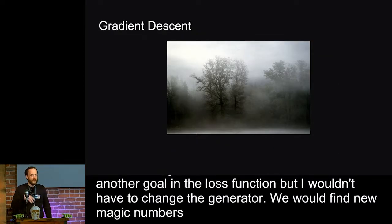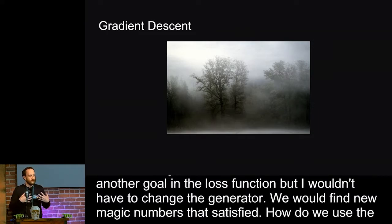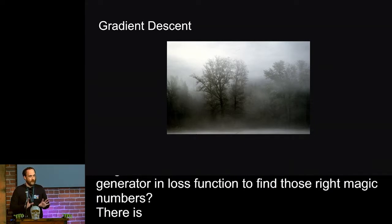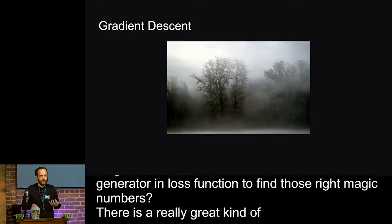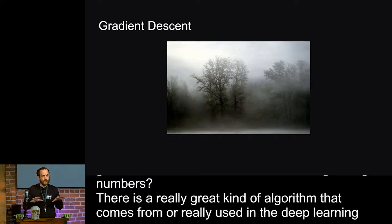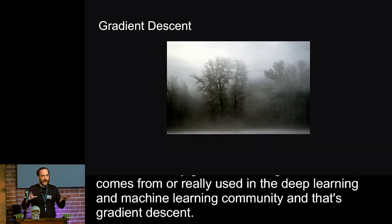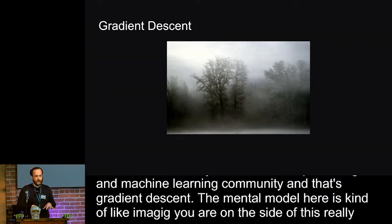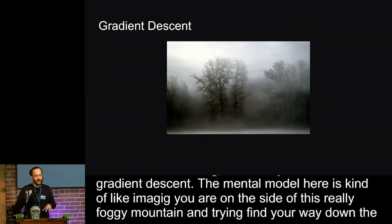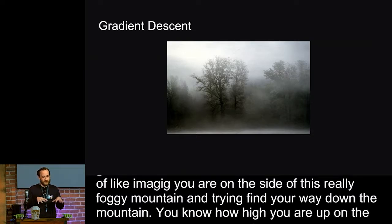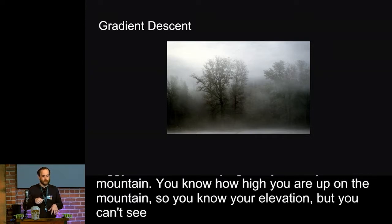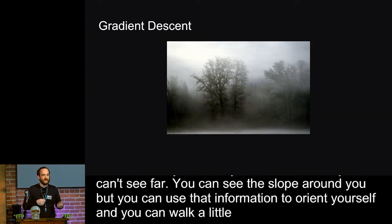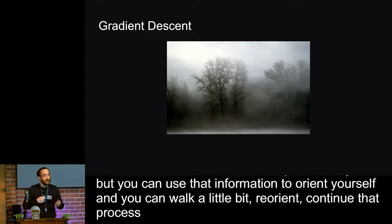So how do we use the generator and the loss function to find those right magic numbers? And so there's a really great algorithm that comes from, or is really used widely in the deep learning and machine learning community, and that's gradient descent. So the mental model here is imagining that you're on the side of this really foggy mountain, and you're trying to find your way down the mountain. You know how high up on the mountain you are, so you know your elevation. You can't see very far. You can see the slope just right around you. But you can use that information to orient yourself, and you can walk a little bit, reorient, and continue that process until you find your way down the side of the mountain. And that's what gradient descent is going to do.